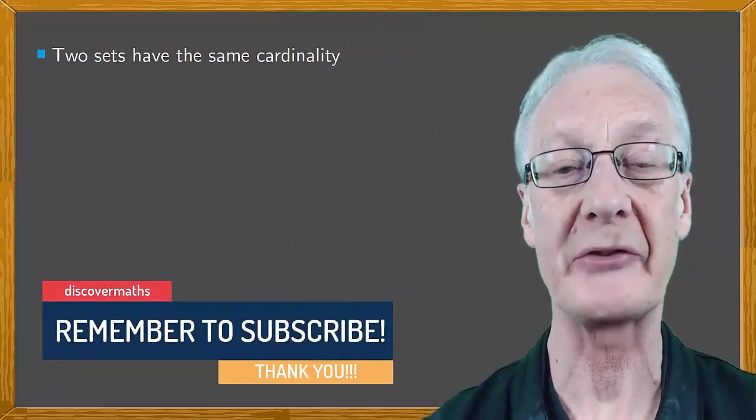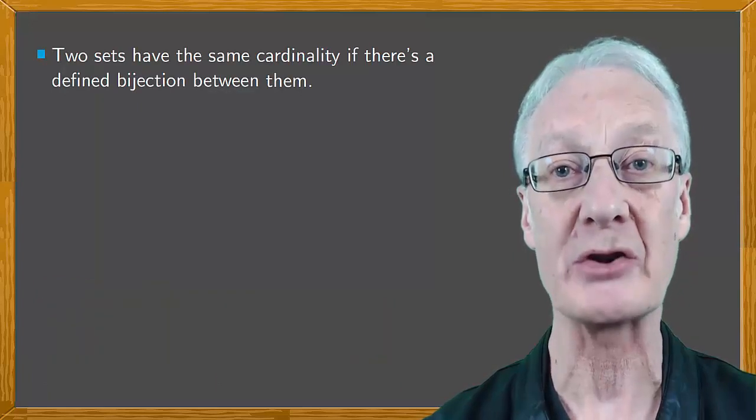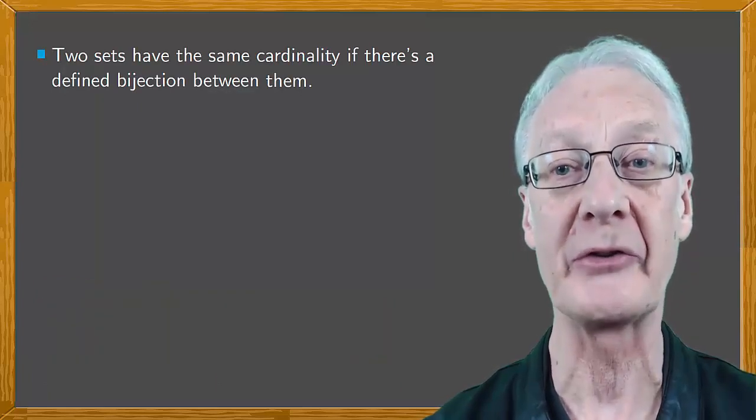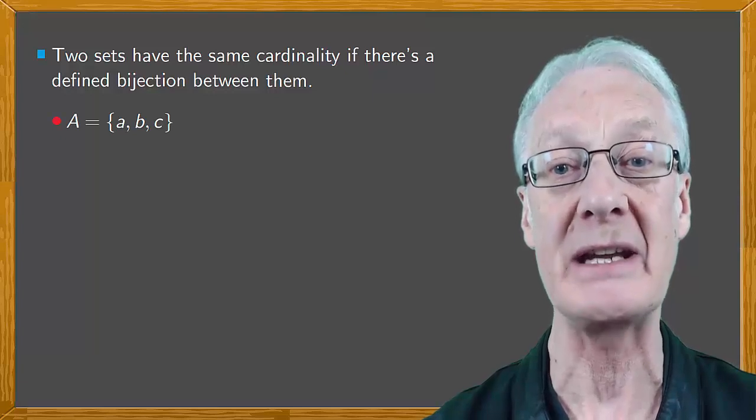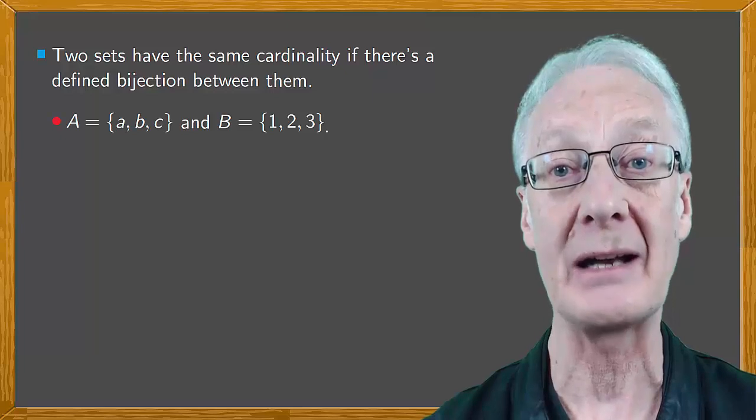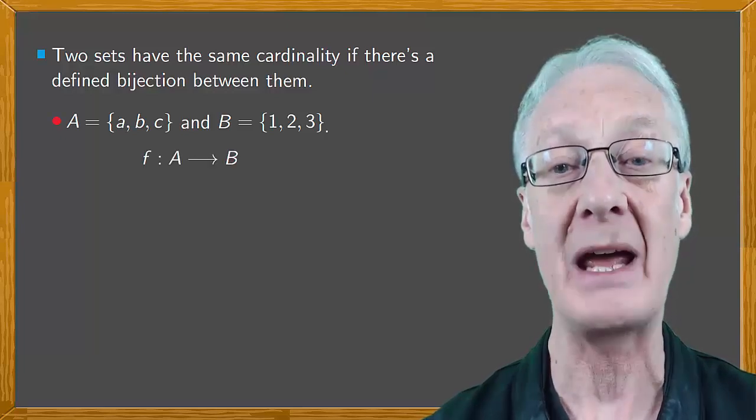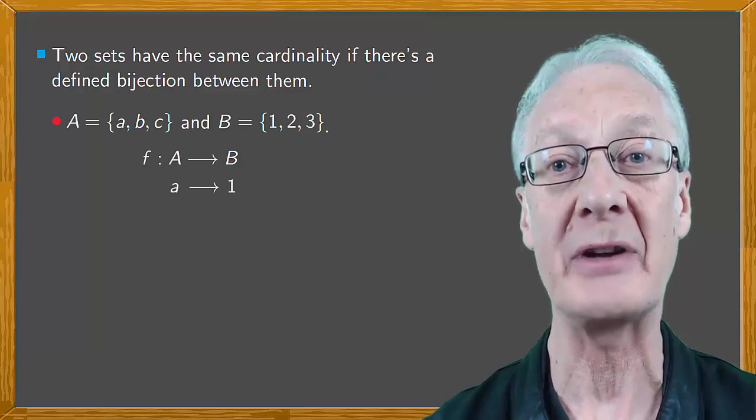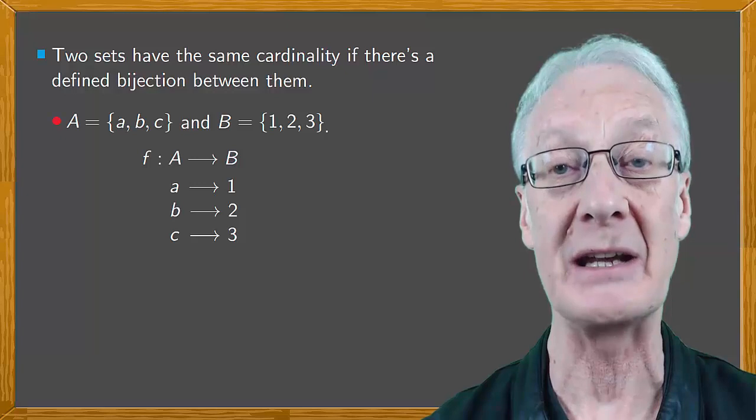In the finite case, it's clear that two sets have the same cardinality if there's a defined bijection or one-to-one correspondence between them. For example, A equals ABC and B equals 123 have the same cardinality because there's a bijective function F from A to B, such that F at A equals 1, F at B equals 2, and F at C equals 3.